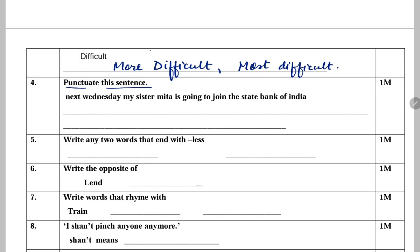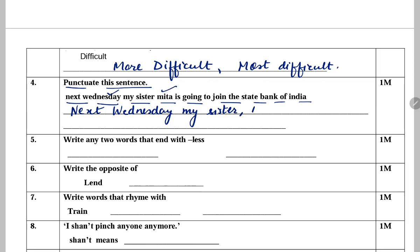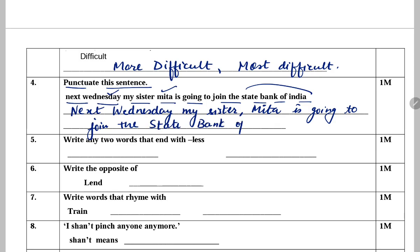Next: Punctuate this sentence — 'when is day my sister meeta is going to join the state bank of india.' Subse pehle toh jo first alphabet hai word ka, woh capital hona chahiye. 'When' — W capital. 'Wednesday', day ka naam hai so W capital. 'Meeta' — sister ka naam hai, capital. 'State Bank of India' — bank ka naam hai, so S capital, B capital, of, I capital.